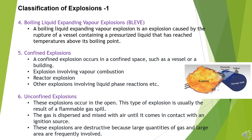6. Unconfined Explosions: These explosions occur in the open. This type of explosion is usually the result of a flammable gas spill. The gas is dispersed and mixed with air until it comes in contact with an ignition source. These explosions are destructive because large quantities of gas and large areas are frequently involved.